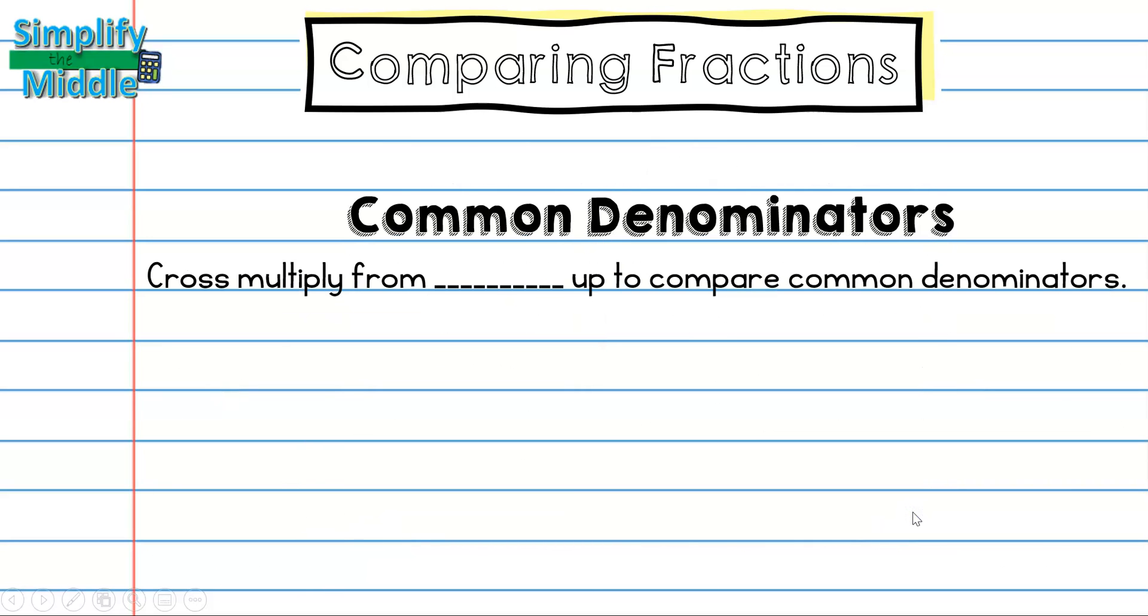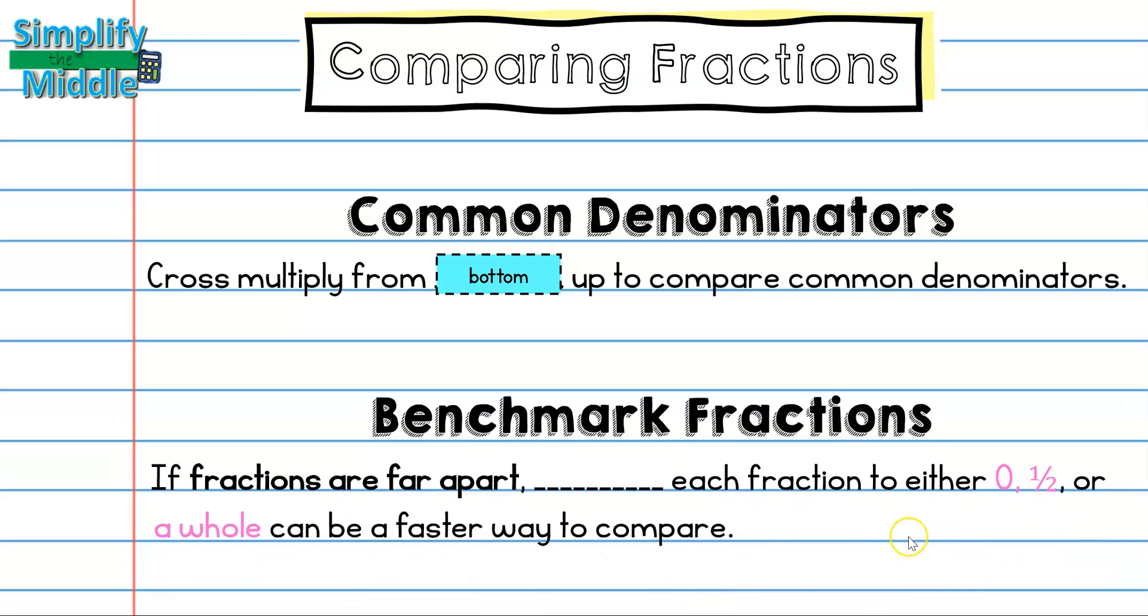Let's recap. When we have common denominators, we cross multiply from the bottom up to compare common denominators. Using common benchmark fractions, if fractions are far apart, comparing each fraction to either 0, 1 half, or a whole can be a faster way to compare.